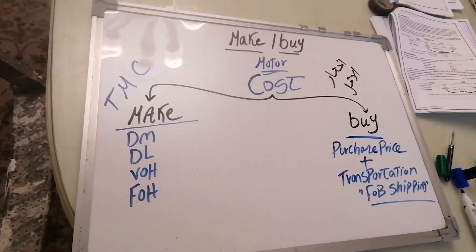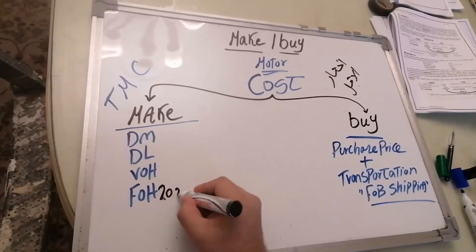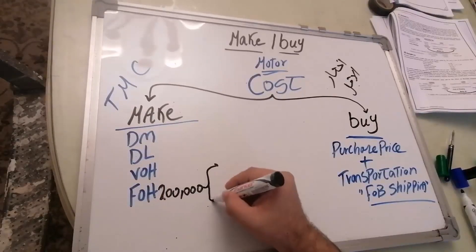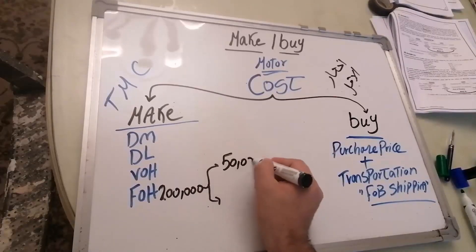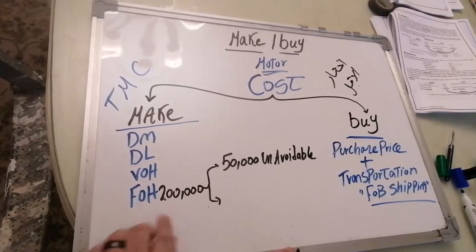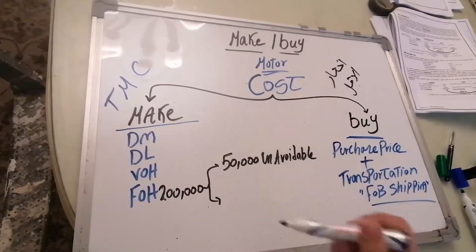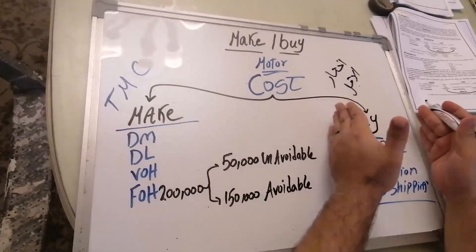The game here has two key points. Let's say you have FOH of 200,000. If you decide to buy from outside, 50,000 of that will be saved. The problem says: 50,000 is unavoidable — meaning it will be paid regardless. Whether you make or buy, you still pay it. So it's unavoidable. The remaining 150,000 would remain, and those are avoidable.